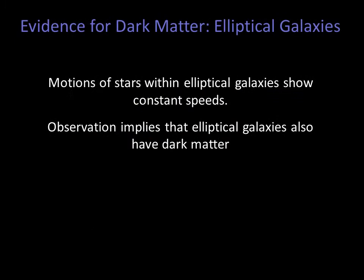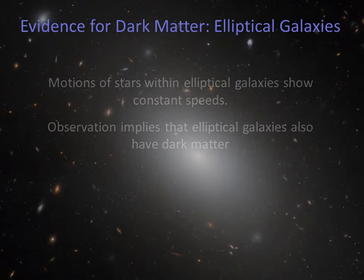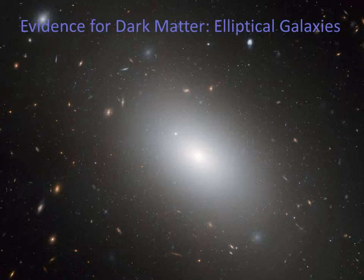We also see evidence for dark matter in elliptical galaxies. By studying absorption lines of elliptical galaxies, astronomers can determine how fast the stars in these galaxies are moving. It turns out that the speeds of stars remain fairly constant from the center of the elliptical galaxies to the edges, just as with the spirals. It appears ellipticals also have dark matter.